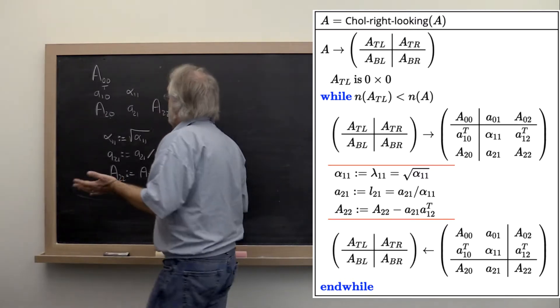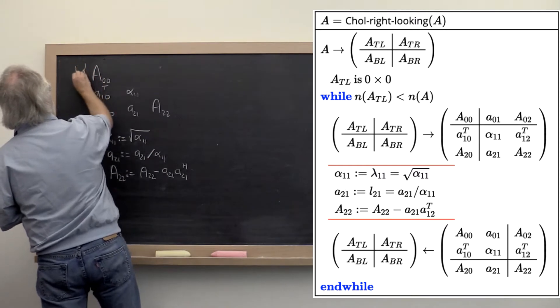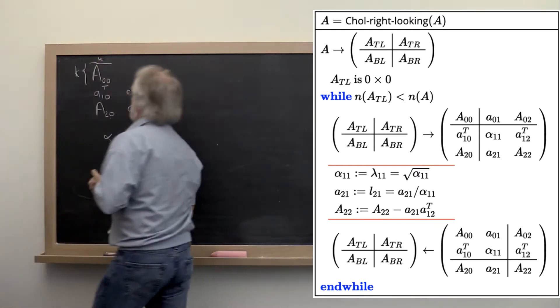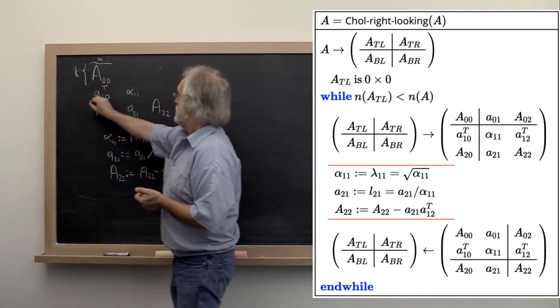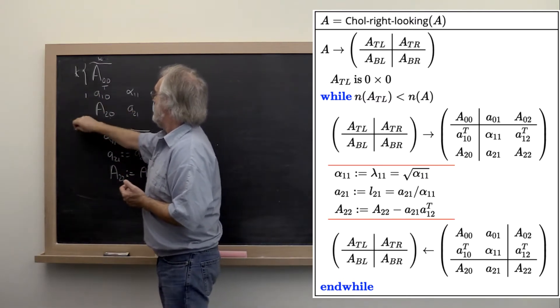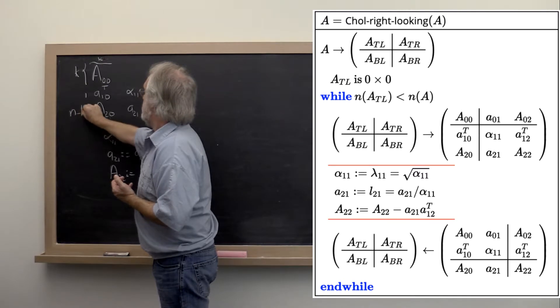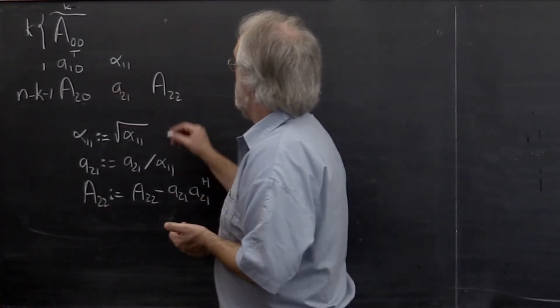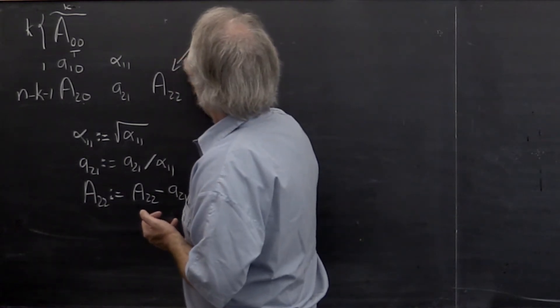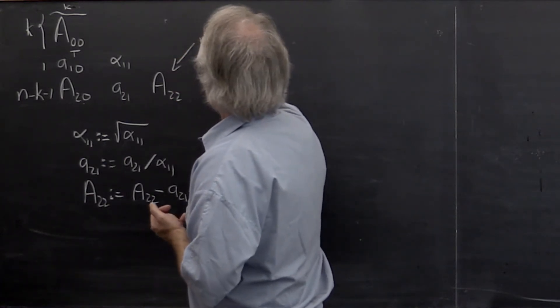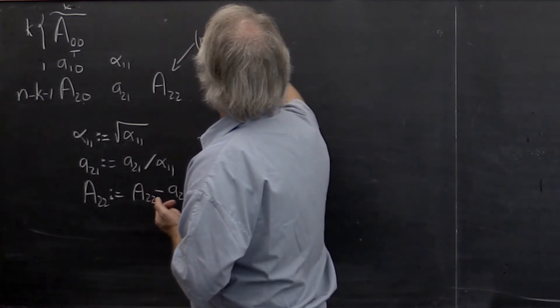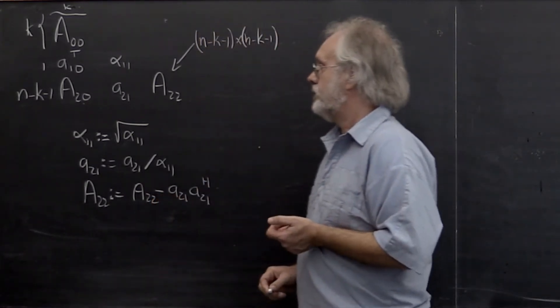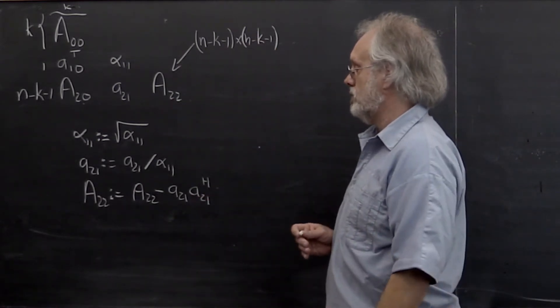Now, in a typical iteration, this matrix here is k by k. This is one row and that makes this n minus k minus 1 rows. And importantly, this right here is an n minus k minus 1 by n minus k minus 1 matrix. And with that we can analyze what the cost of the different parts are.